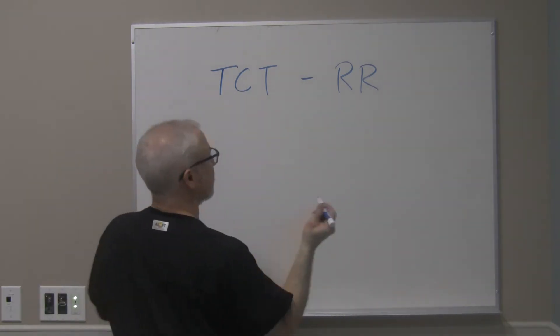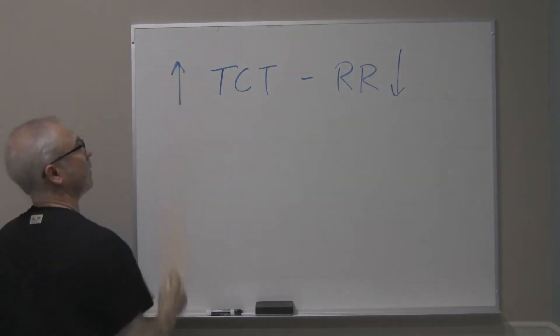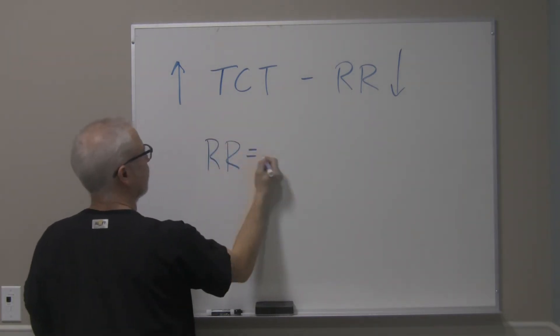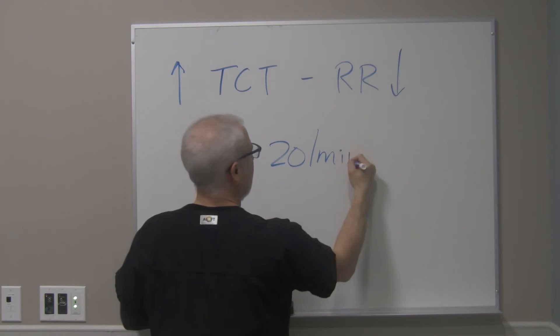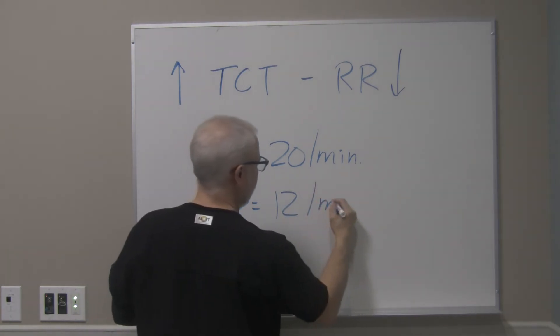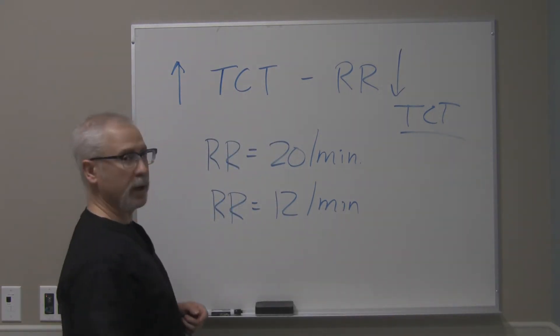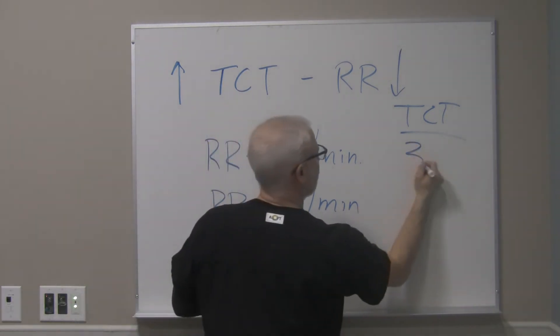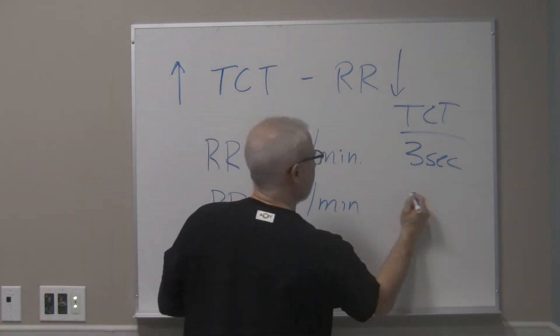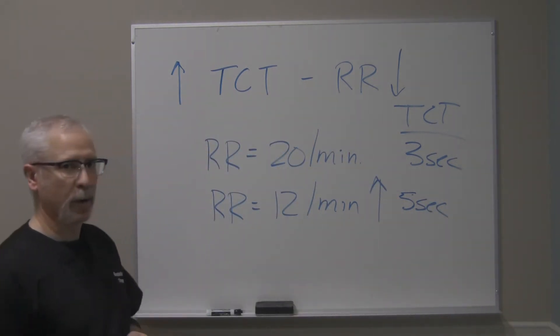On the other hand, if the patient's respiratory rate drops, total cycle time has to then increase. So if you have a patient who has a respiratory rate equal to 20 per minute, and now the new respiratory rate is equal to 12 per minute, the total cycle time for a respiratory rate of 20 per minute is 3 seconds. The respiratory rate of 12 results in a total cycle time of 5 seconds. You can see the total cycle time then increases as the respiratory rate drops.